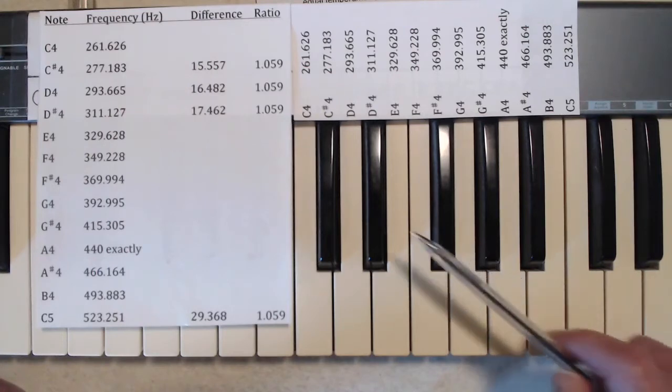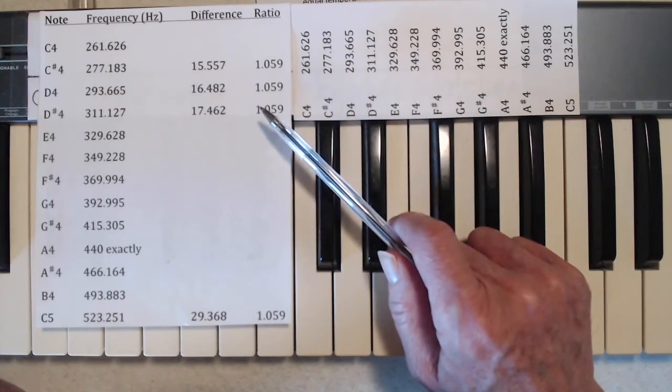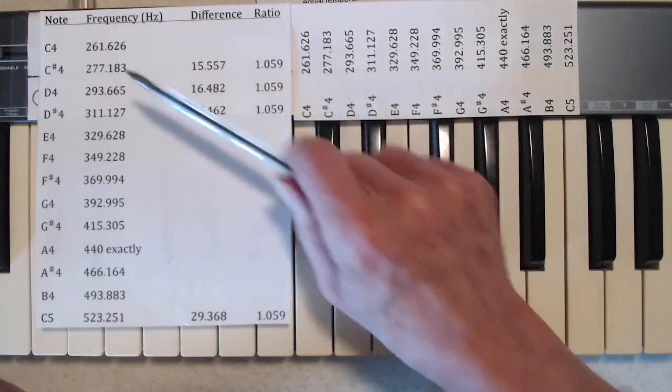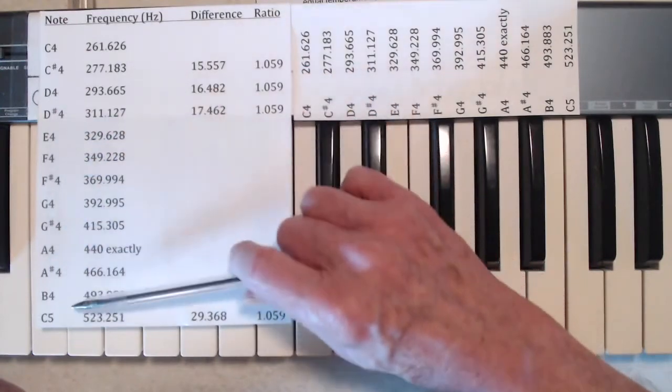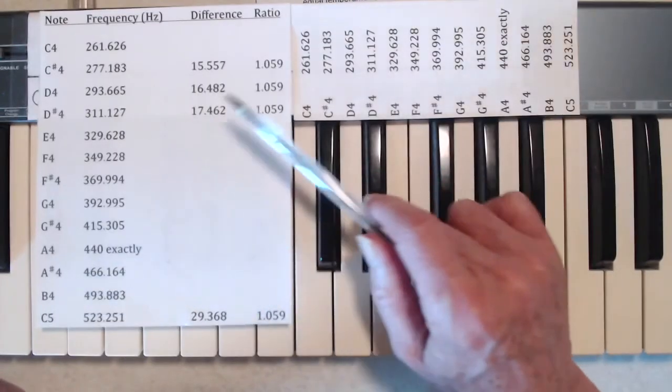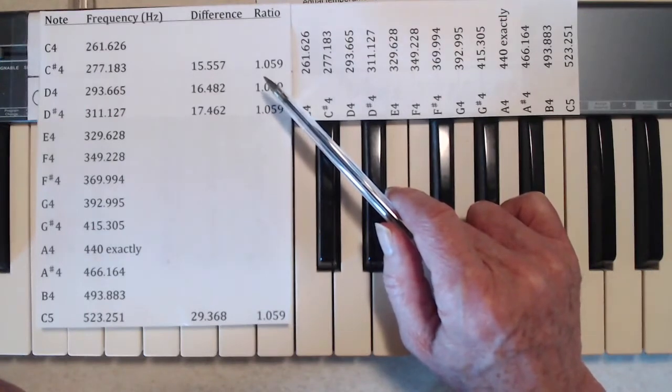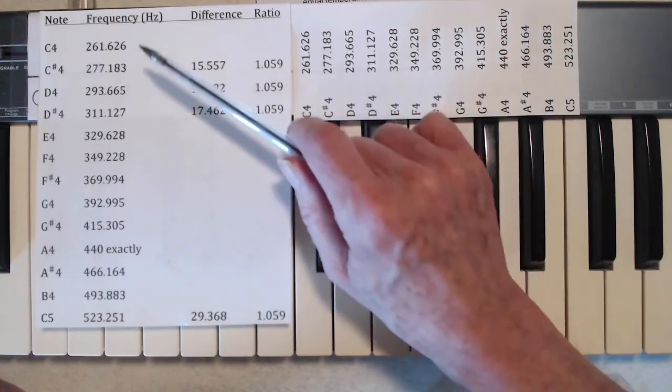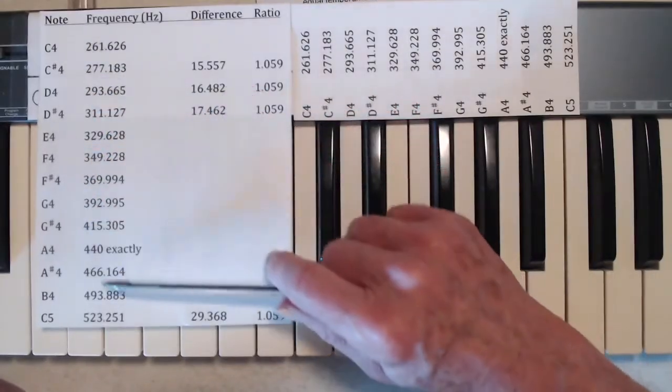Now, if we go back to this figure here, in going from C4 to C5, we make 12 jumps, each with this ratio. Now, I'm going to use my calculator to figure out what that means overall in going through the octave from C4 to C5.